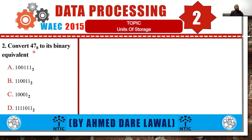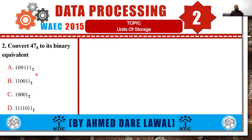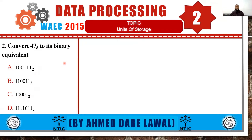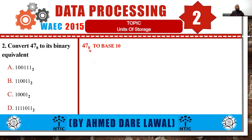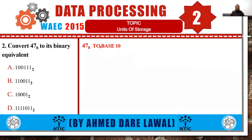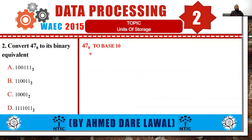Question two says: convert 47 base 8 to its binary equivalent. We have four options, and this is more of a calculation. First of all, we're going to convert 47 base 8 to base 10, and after this we're going to convert it to base 2, which will give us the binary equivalent we are looking for.